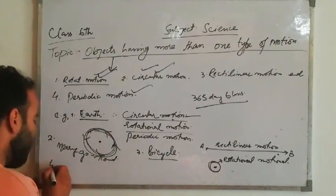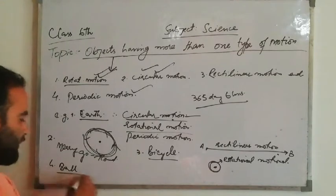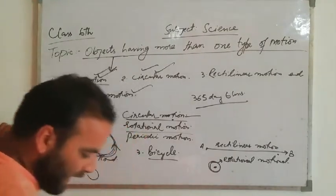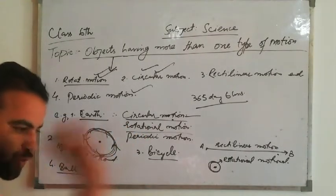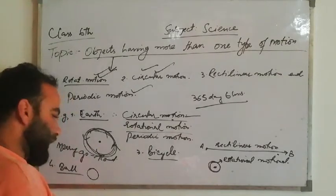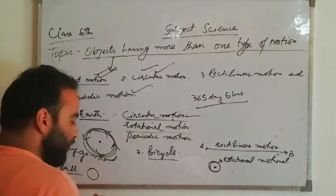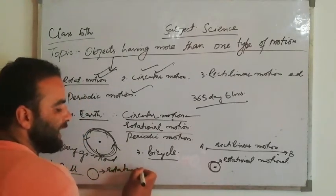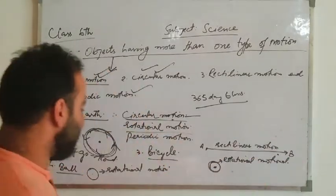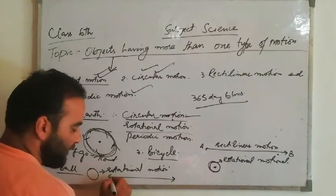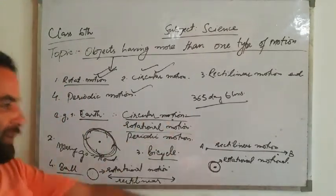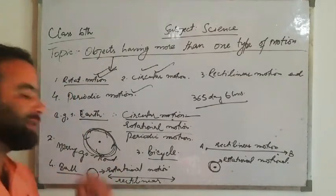Number four example is a ball. If a ball rolls on the ground, it rotates around its own axis, which is rotational motion. At the same time, the ball moves along a straight line on the ground, which is rectilinear motion. So a rolling ball shows both rotational motion and rectilinear motion.